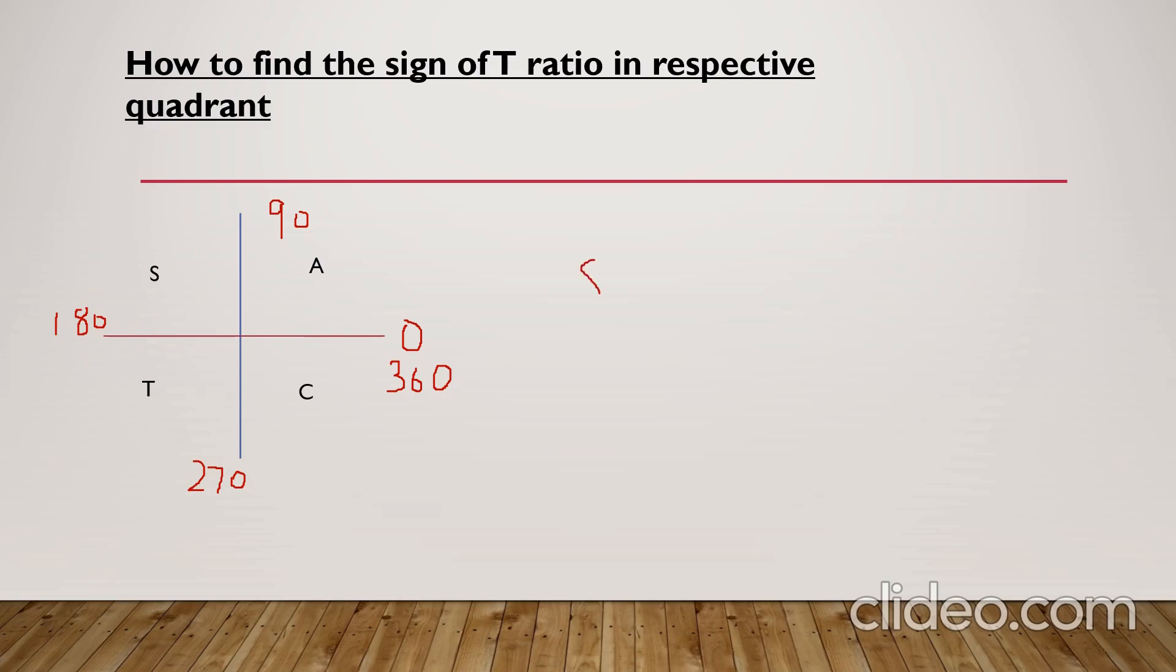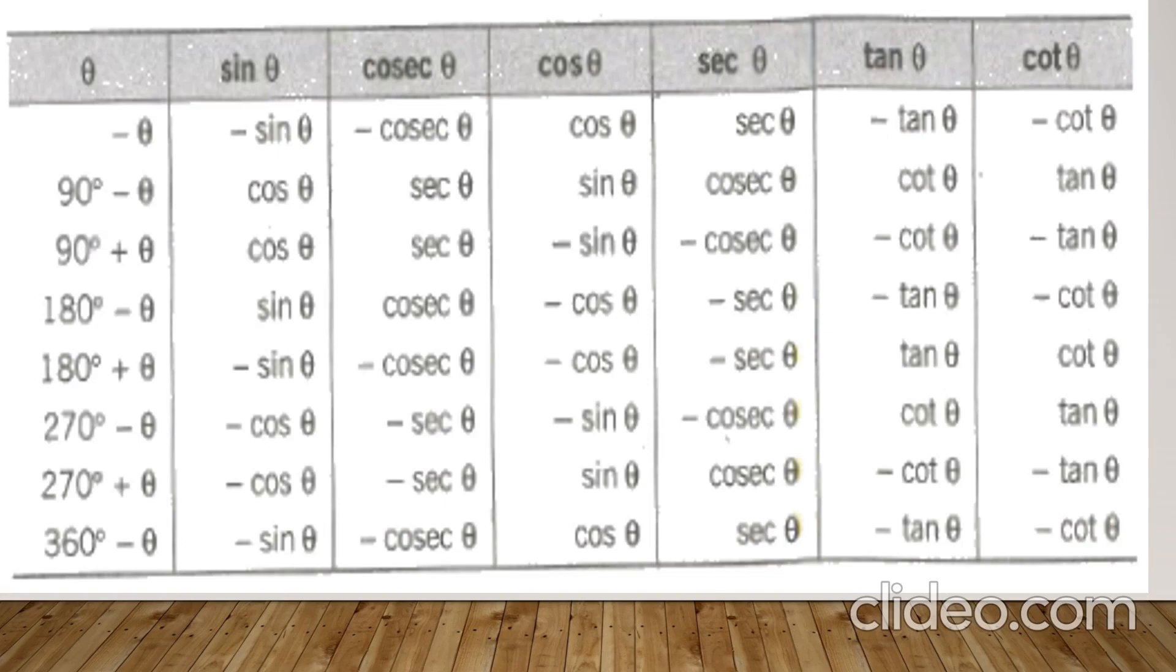If I say sine 120, you see sine 120 is in the second quadrant. We break it as sine 180 minus 60. Since sine is positive, sine 180 minus theta becomes sine theta. So this becomes sine 60, and sine 60 equals root 3 by 2. Now here is the table. You will make this table by the previous chart.